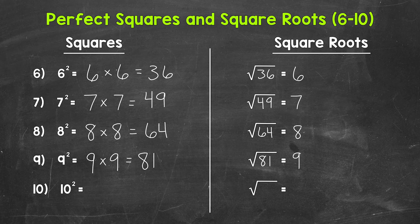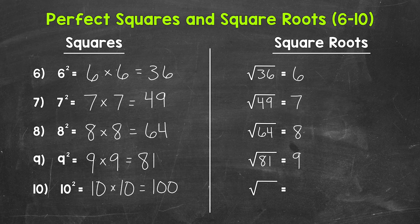Let's move on to number ten, where we have ten squared. That means ten times ten, which equals 100. Ten squared equals 100, and that means the square root of 100 equals ten.